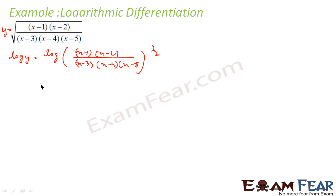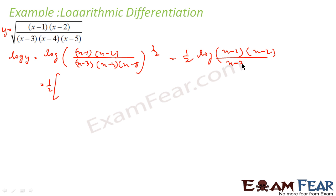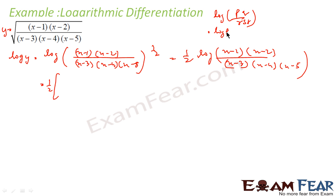This is nothing but 1 by 2 common, log of this. This is 1 by 2 times log of (x minus 1)(x minus 2) over (x minus 3)(x minus 4)(x minus 5). Now this is of the form log(pq over rst), which equals log p plus log q minus log r minus log s minus log t. That is the value of this.